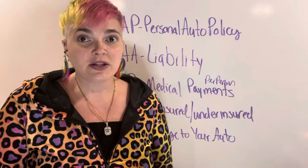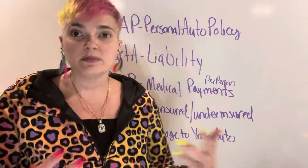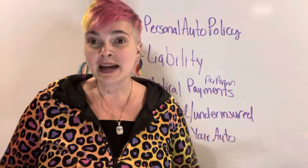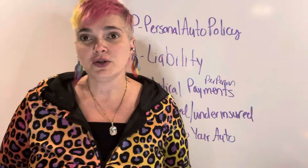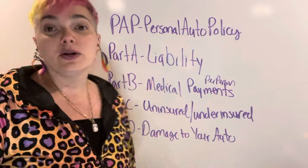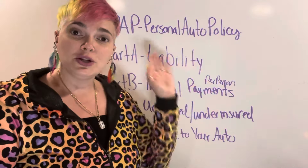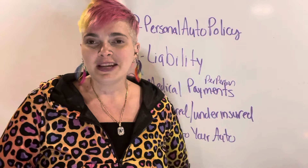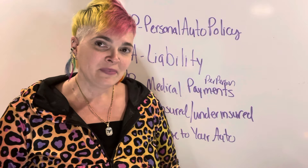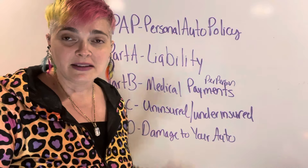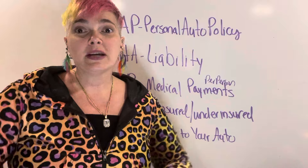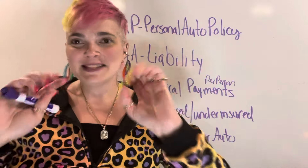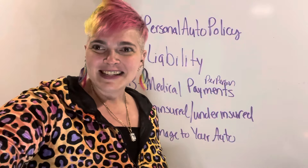A lot of exam questions simply ask what is part A or part B on an auto policy — just knowing the names of the parts is four questions right there. This was a brief overview of the different parts of an auto policy. If you need help, drop a comment or email insuranceexamqueen@gmail.com. Boot camp classes are also available live or on recording for a fuller, deeper understanding of this material. Have a fantastic day — sending you all the positive vibes to pass your exam!